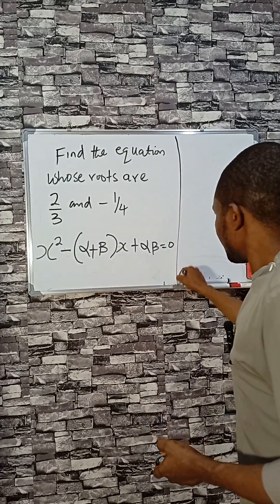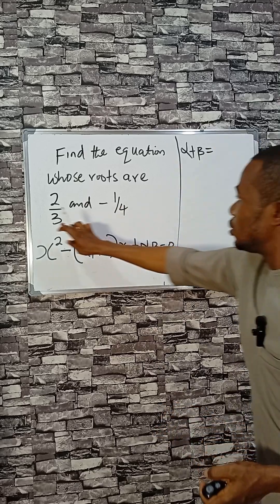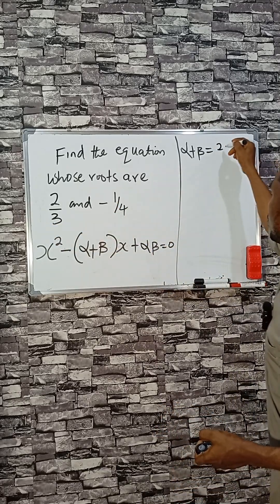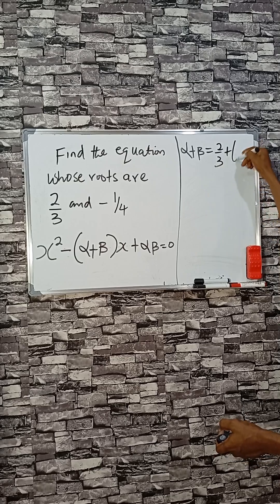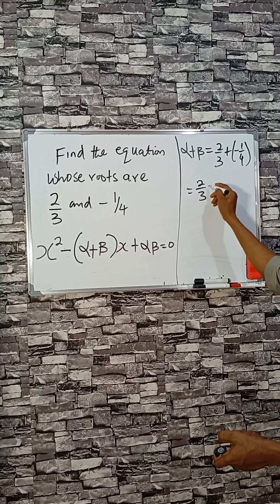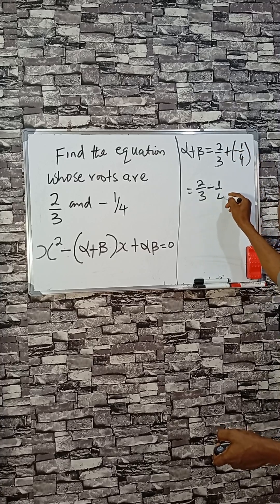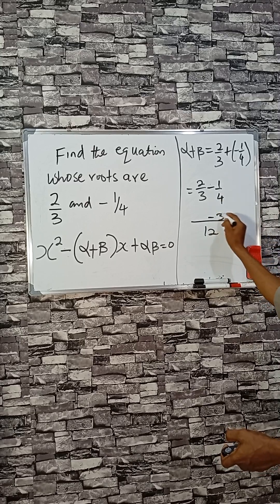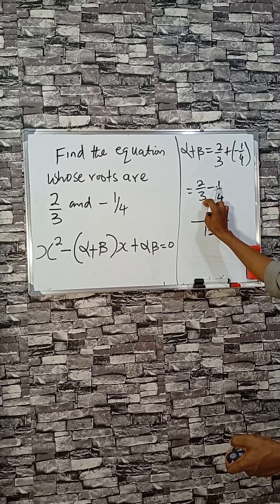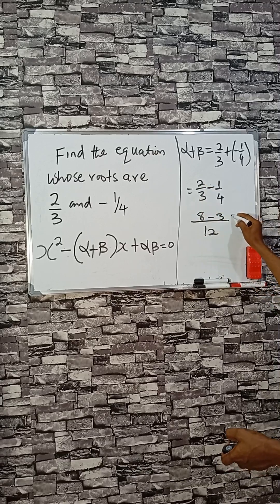Let's find the sum of the two roots: 2/3 plus -1/4. That's 2/3 minus 1/4. Using 12 as the common denominator: 12 divided by 3 is 4, times 2 is 8. 12 divided by 4 is 3, times 1 is 3. So 8 minus 3 equals 5/12.